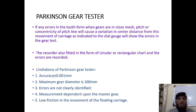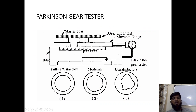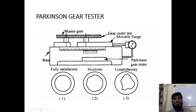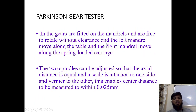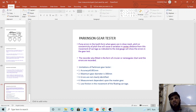The limitation of the Parkinson gear tester is its accuracy of only ±0.001 mm (10⁻³ mm). The maximum center distance between the two gears is 300 mm — gears with a center distance beyond 300 mm cannot be tested. The measurement depends on the master gear and on low-friction movement of the floating carriage. High friction causes improper readings on the dial gauge, since even small variations in rotation are observed by the dial gauge.